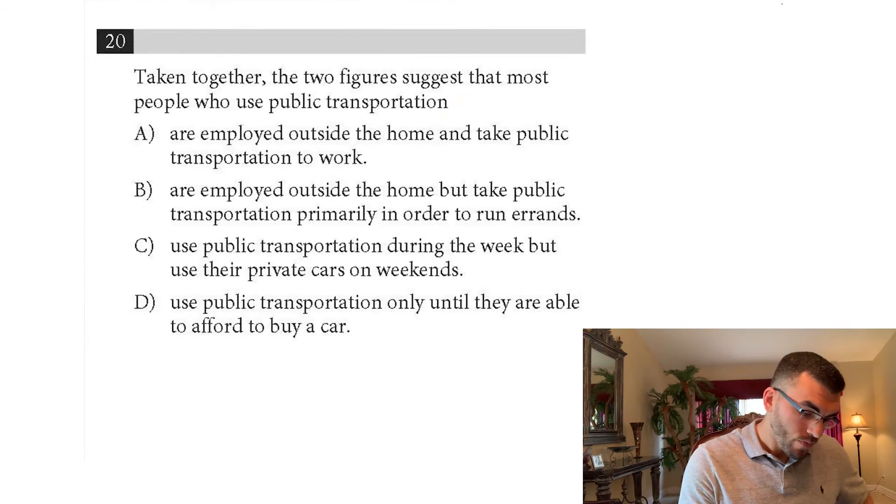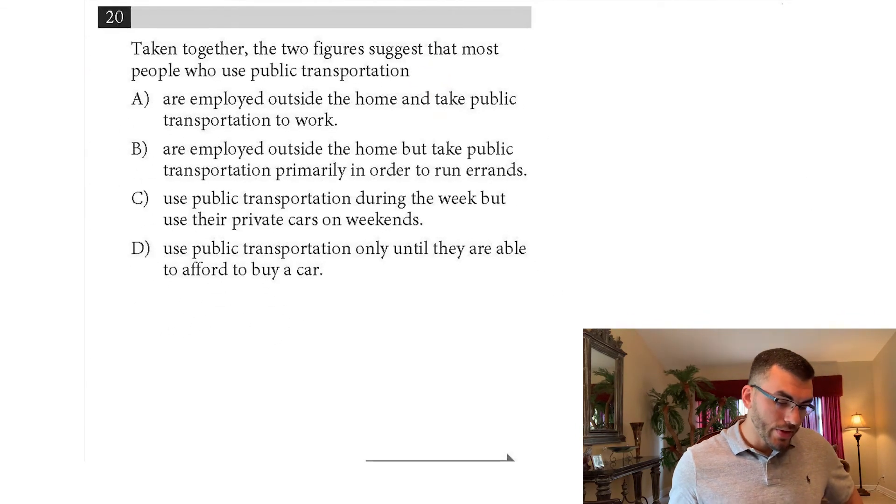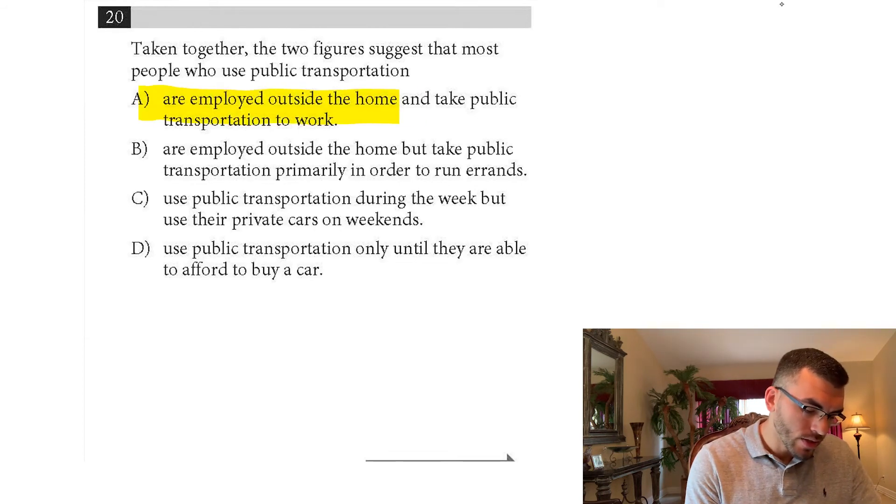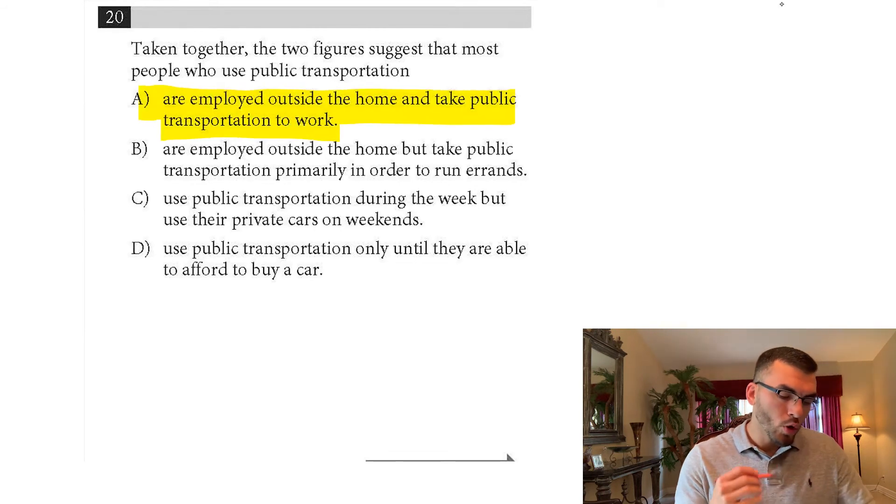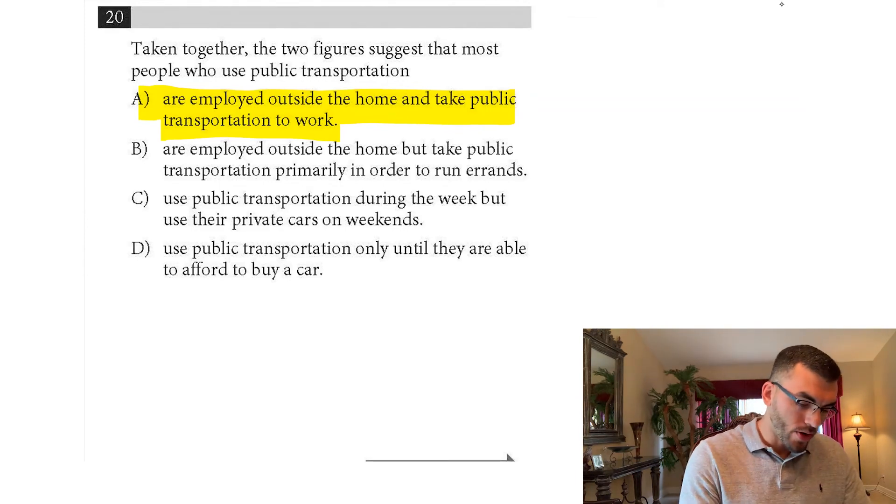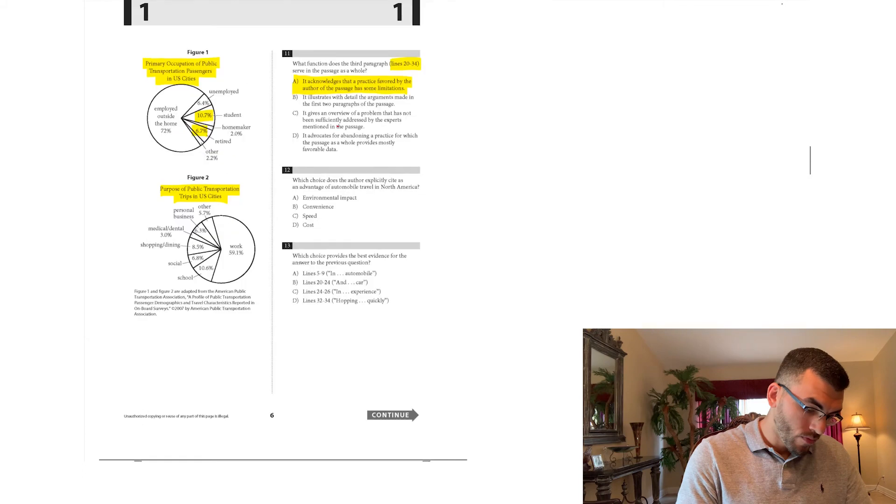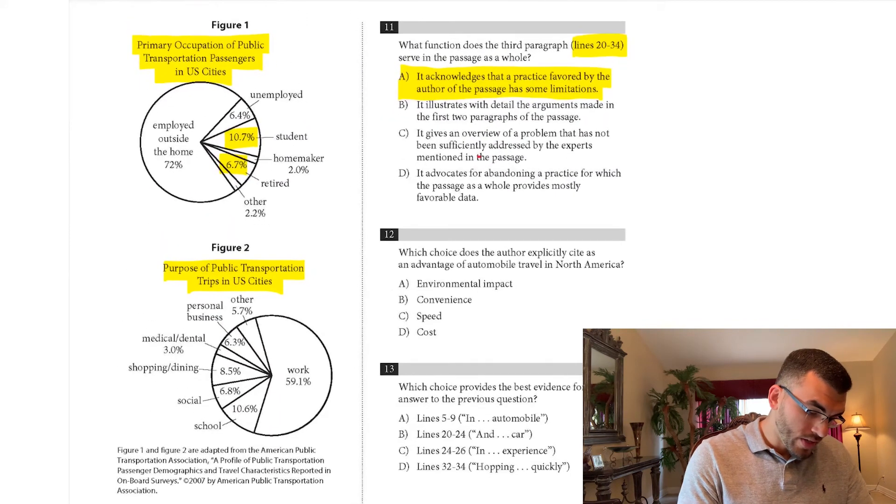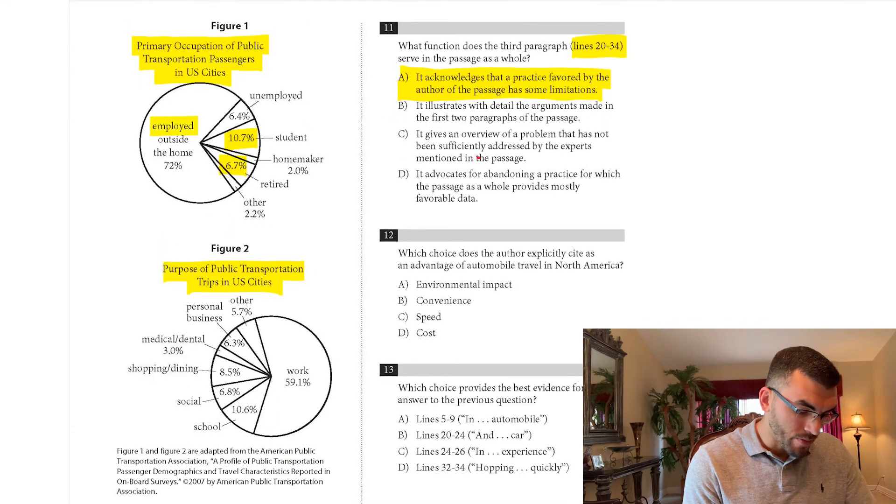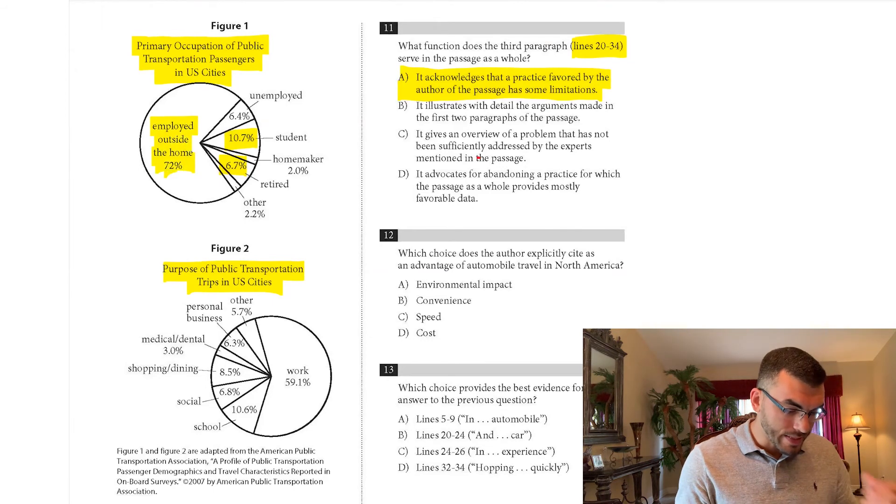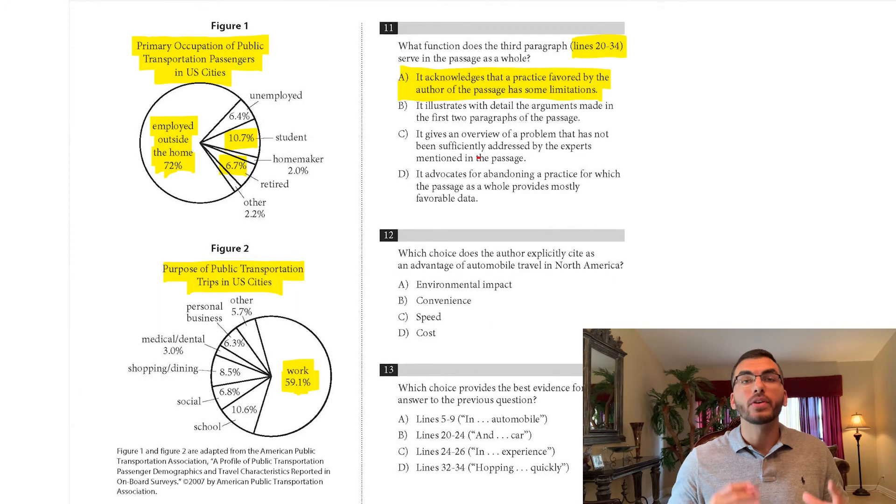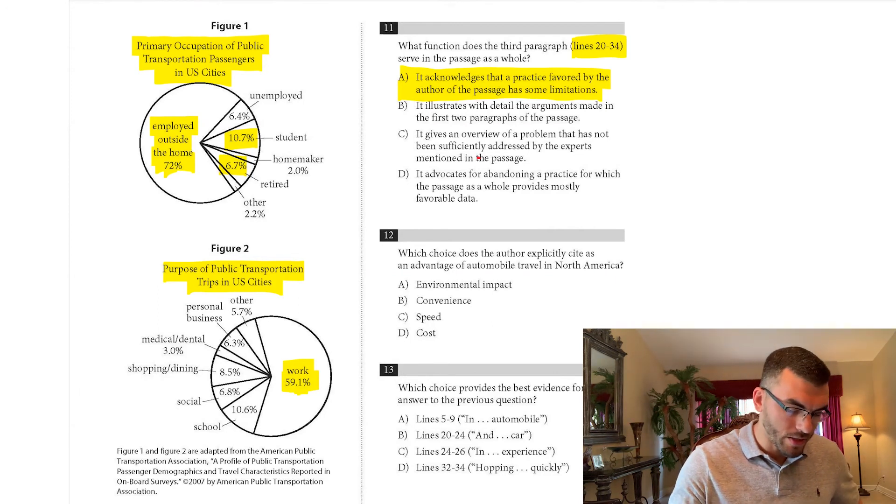Question number 20. Taken together, the two figures suggest that most people who use public transportation, the correct answer is A, are employed outside the home and take it to work. So on this figure, the majority of people, what their job is, they're employed outside the home. That's the biggest number, 72%, and they take it to work. That's the biggest number, 59.1%. So taken together, those are the primary people that take public transportation.